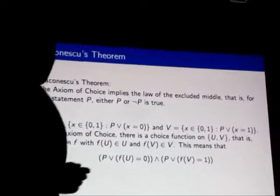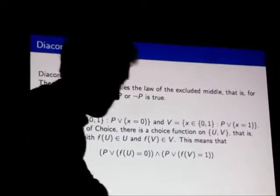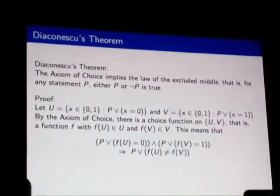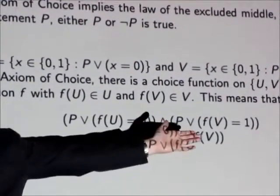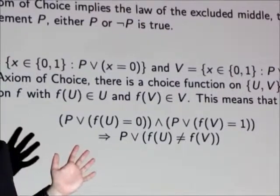I'm just going to rewrite this line. I'll rewrite this as either P or f(U) is not equal to f(V), because f(U) is 0 and f(V) is 1, right? So far so good?